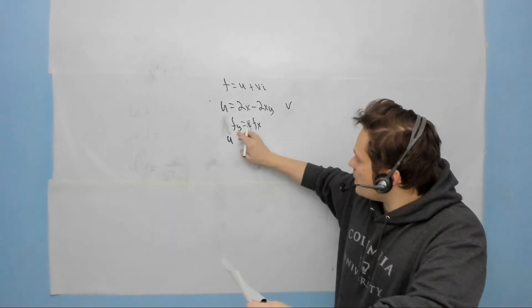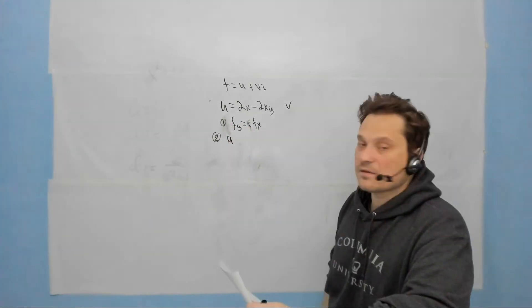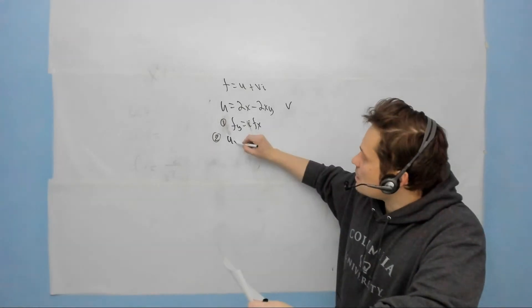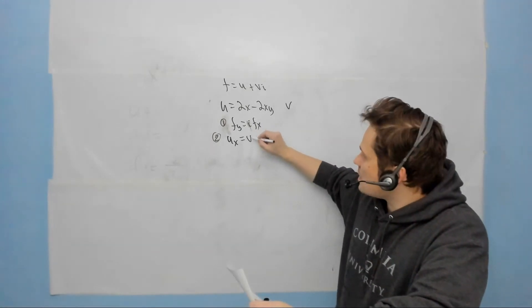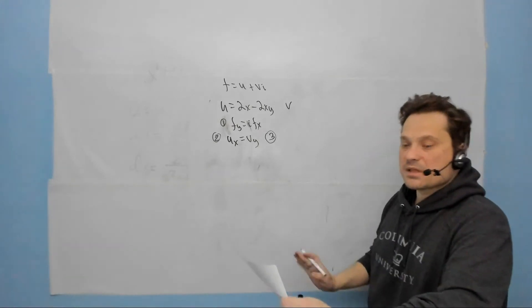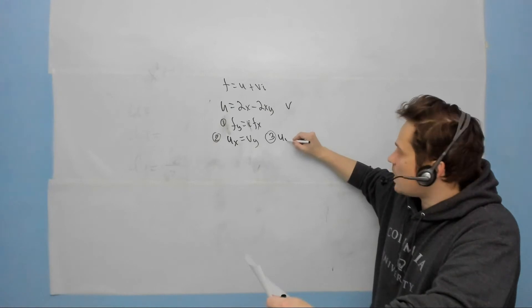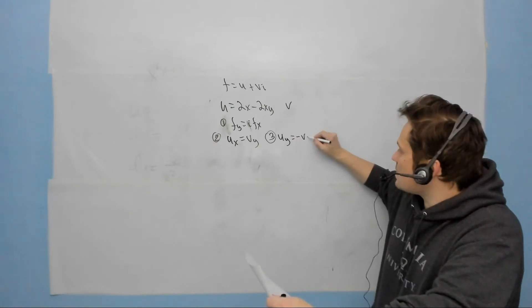Expanding this equation here, I'm going to call this equation 1. It will give me in terms of individual components that u sub x equals v sub y. Equation 3 will say that u sub y equals negative v sub x.